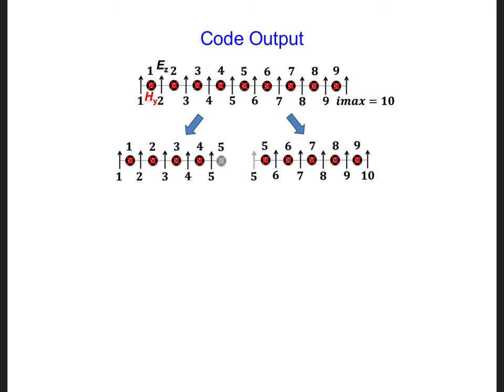So using our new parallelized code, how can we write out all the EZ components if the EZ components are distributed onto two different processors?